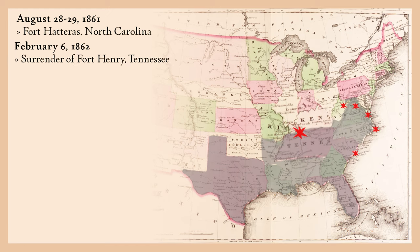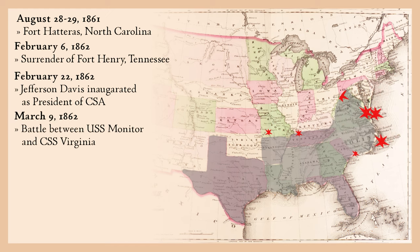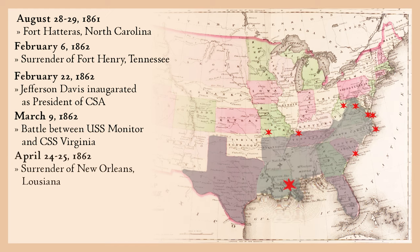February 6, 1862 — surrender of Fort Henry, Tennessee; the loss opened the door to Union control of the Tennessee River. February 22 — Jefferson Davis is inaugurated as President of the Confederate States of America. March 9 — the naval battle between the USS Monitor and the CSS Virginia is the first ironclads battle, fought in Hampton Roads, Virginia. April 24–25 — a Union fleet under Admiral David Farragut passes Confederate forts guarding the mouth of the Mississippi River. On April 25, the fleet arrived at New Orleans and demanded its surrender; within two days the fort fell and the mouth of the Mississippi was under Union control.